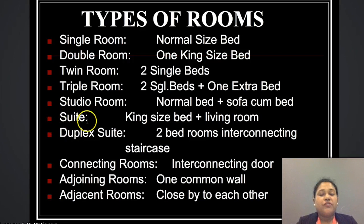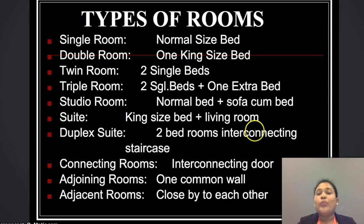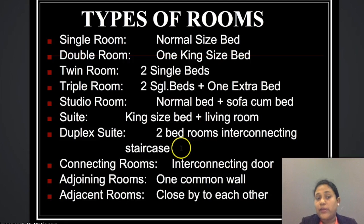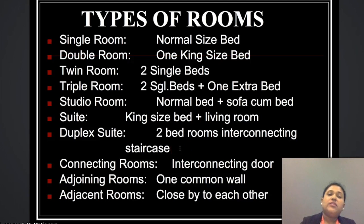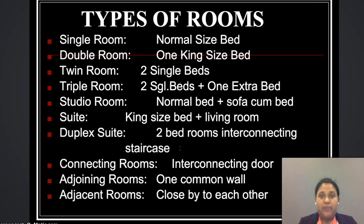Suite rooms, which are very common nowadays, are a room with a king size bed and a normal living room. Duplex suites have two bedrooms with an interconnecting staircase in the room itself, meaning two rooms with two extra facilities as well. Most hotels have the duplex suite named after their presidents or chairmen — called the presidential suite or chairman suite.